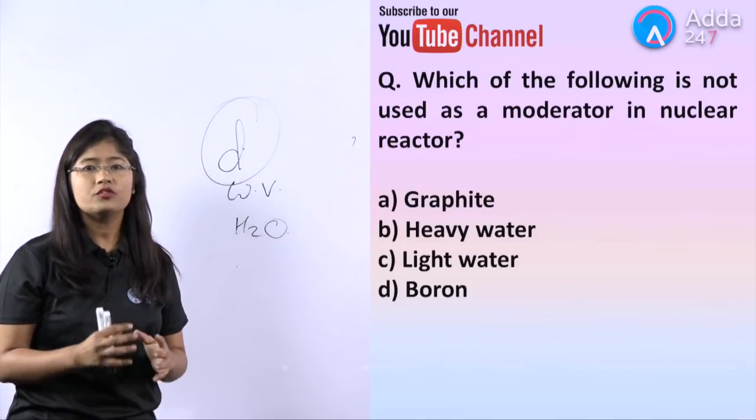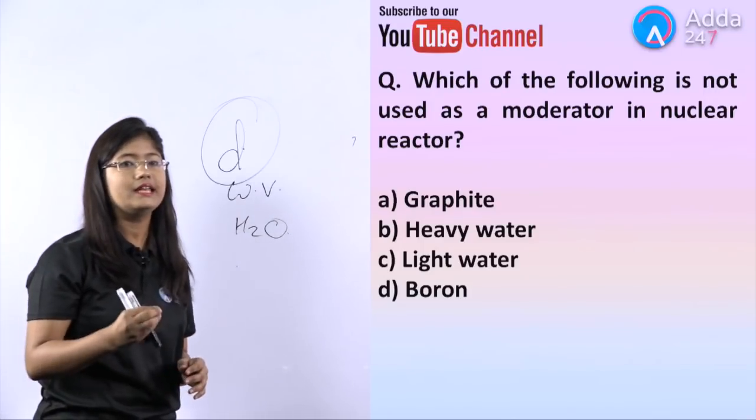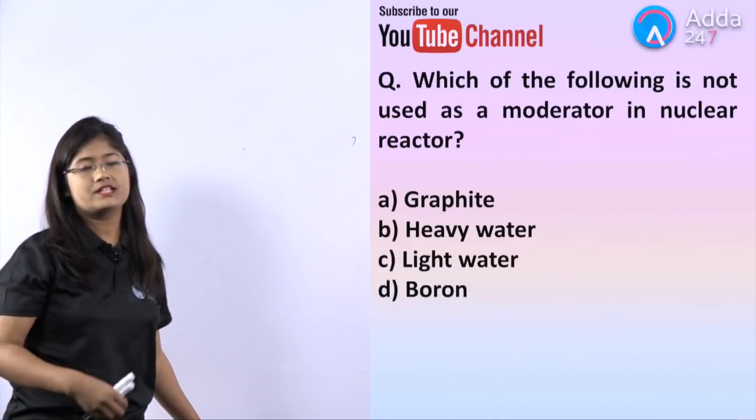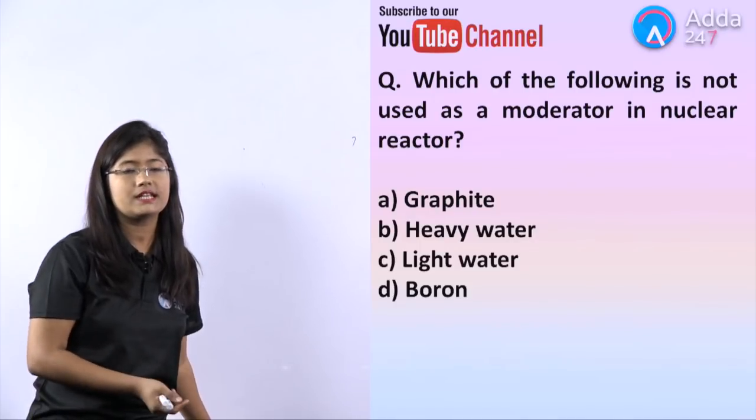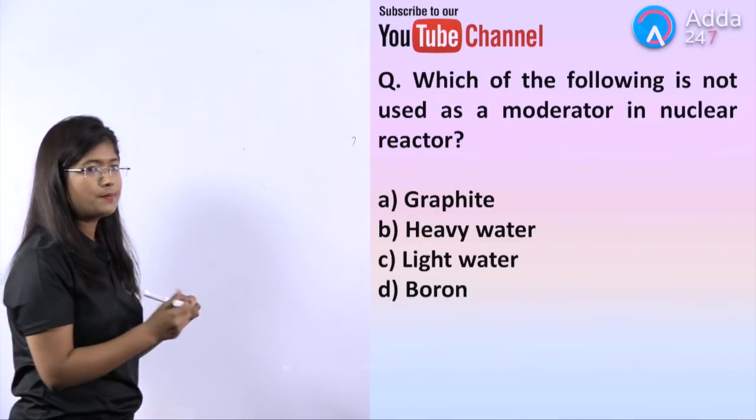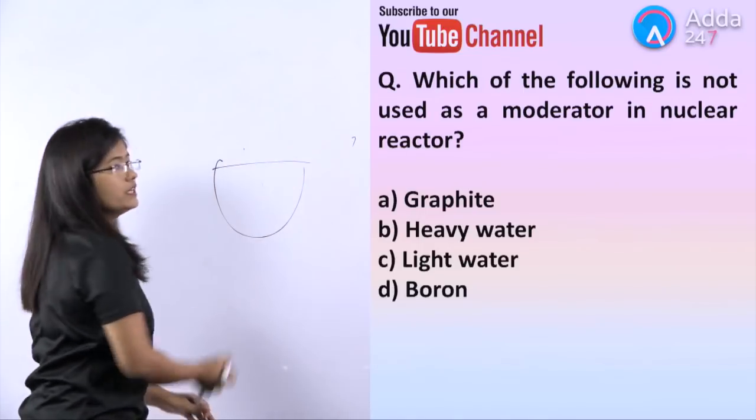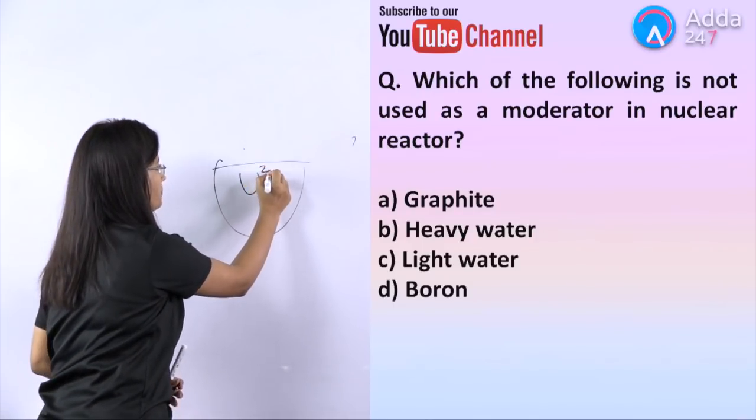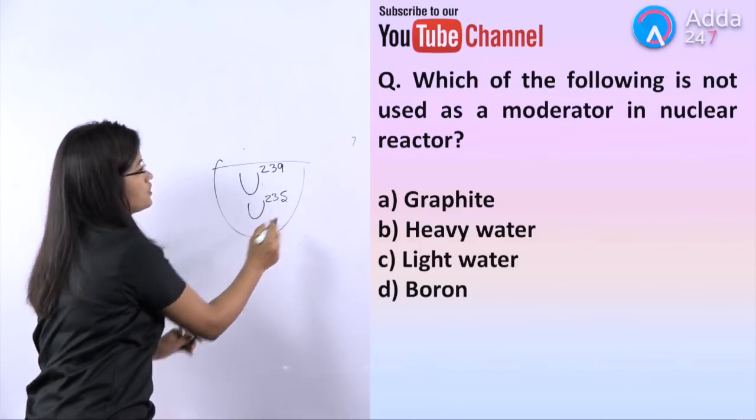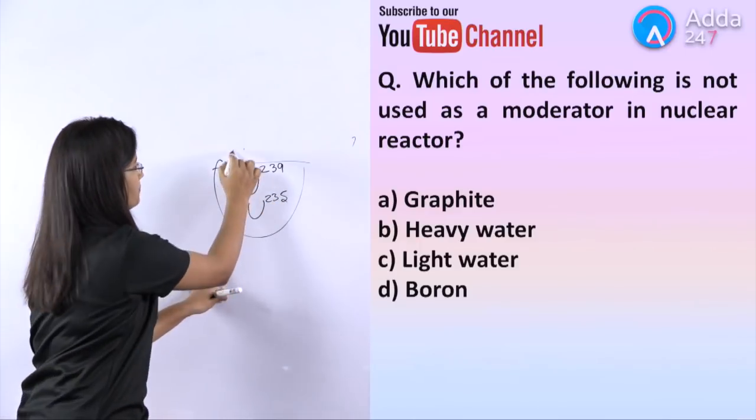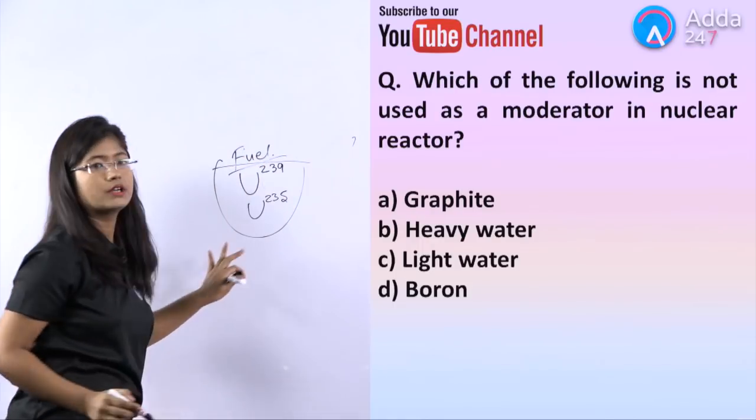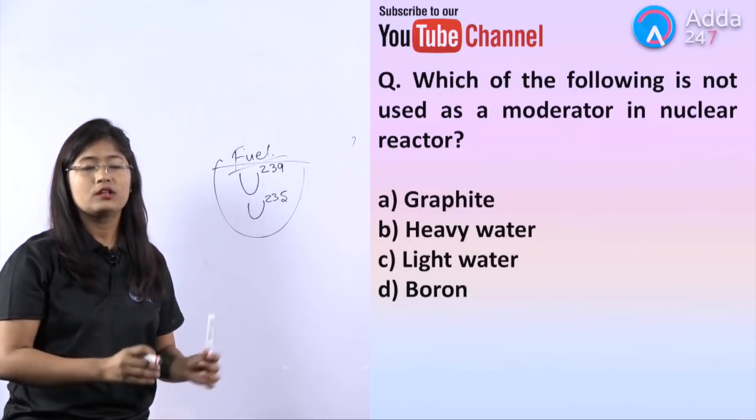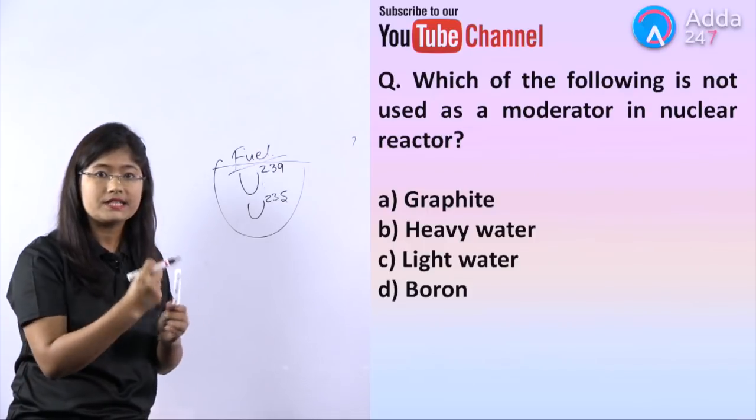Which of the following is not used as a moderator in nuclear reactor? If moderator is asked, next year they might ask about fuel. Remember, if you're making nuclear energy, you need fuel first. You will use uranium 239 or uranium 235. Nuclear fuel will be uranium 235 and 239. Now you have to have a moderator to decrease the energy, to moderate it.